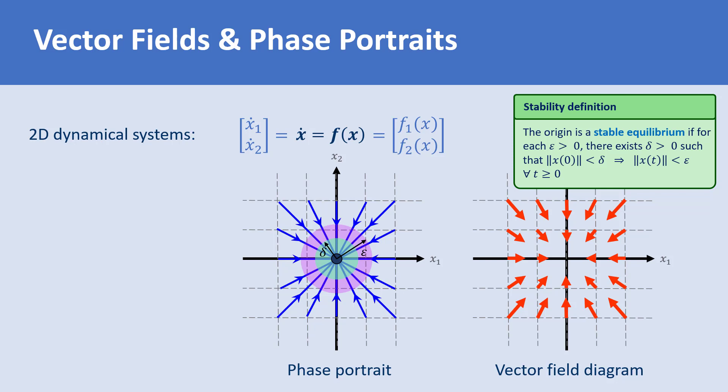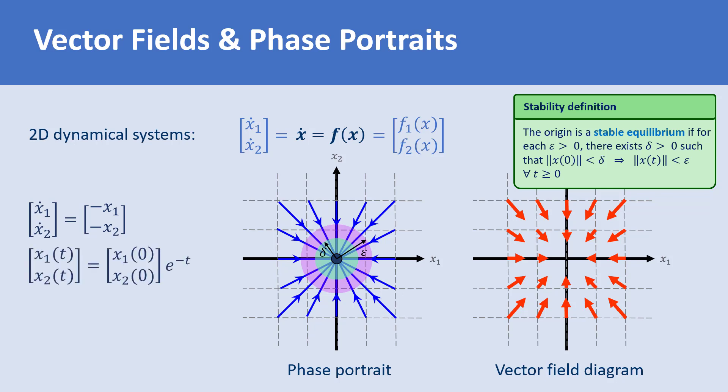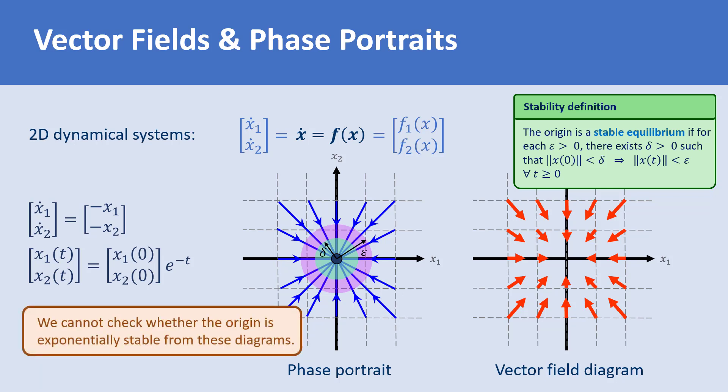The dynamical model of this example is x1-dot equals minus x1 and x2-dot equals minus x2. The solutions starting from initial conditions x1(0) and x2(0) are x1(t) equals x1(0) times e to the minus t, and x2(t) equals x2(0) times e to the minus t. So the origin is not only asymptotically stable but also exponentially stable. However, we cannot show exponential stability using phase portrait or vector field diagrams.